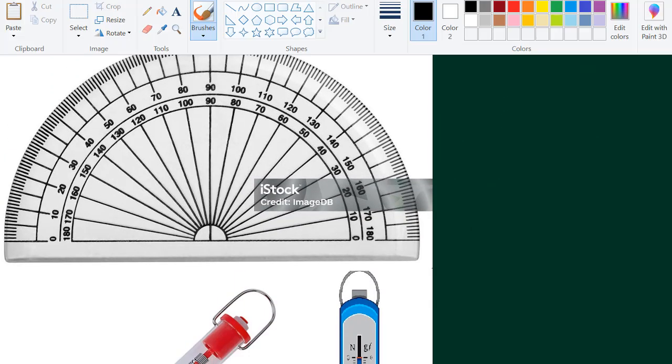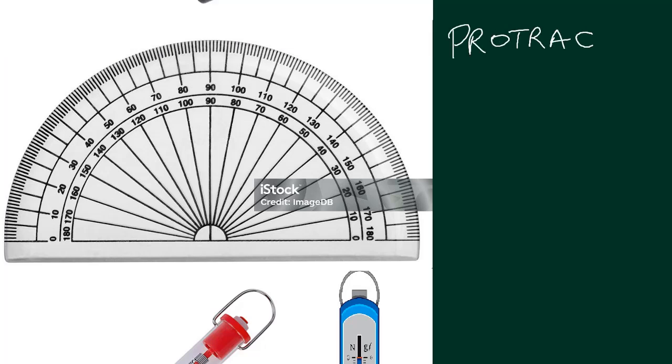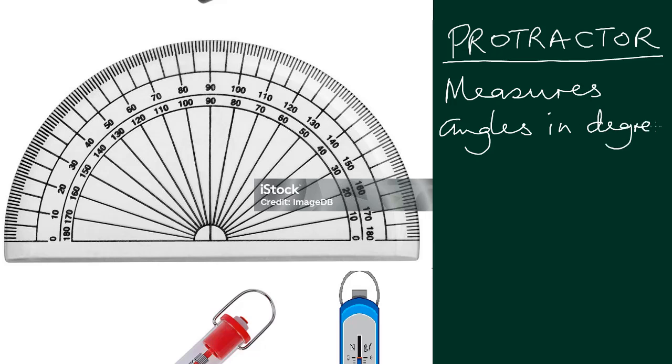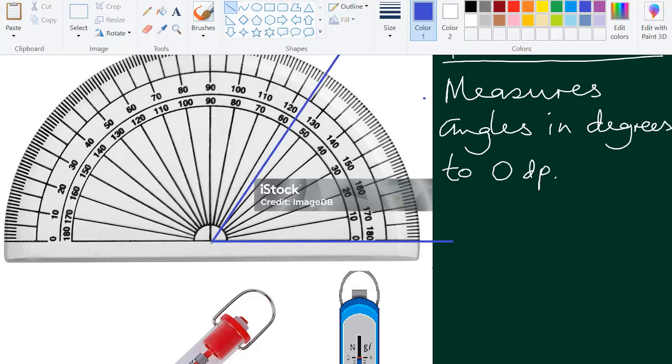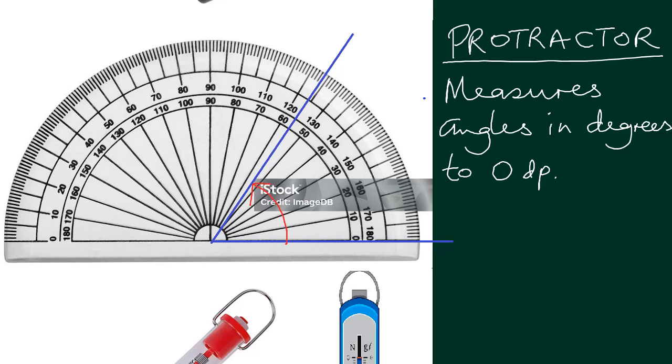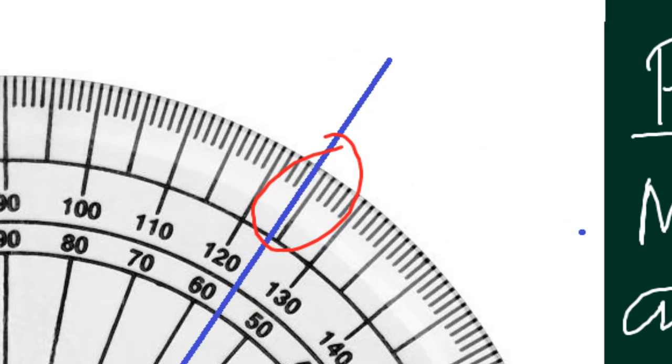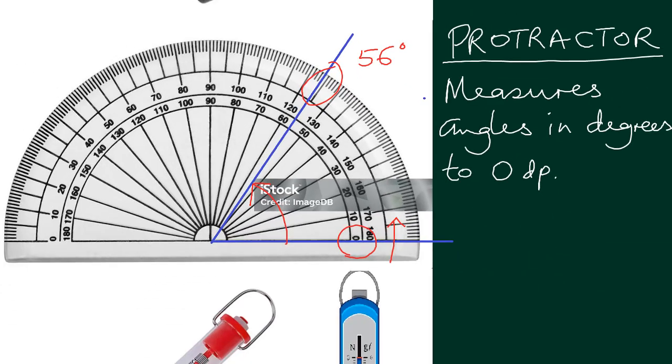Then another instrument is called a protractor. The protractor measures angles exactly to zero decimal places or whole numbers. If you're measuring this angle here, it is exactly 56 degrees. Don't put a point or anything.